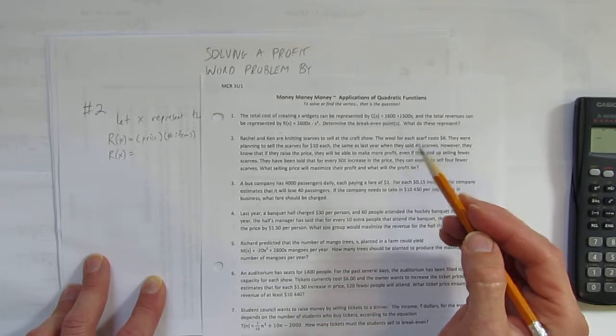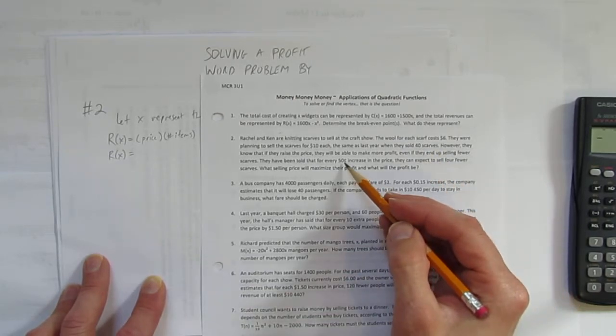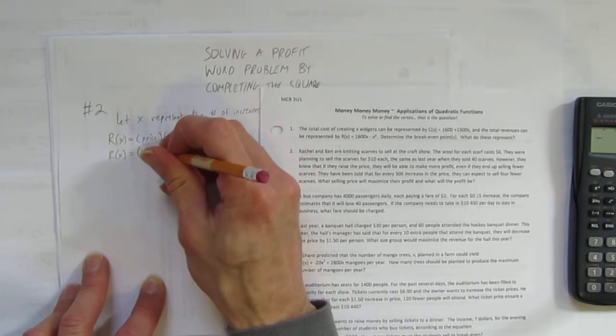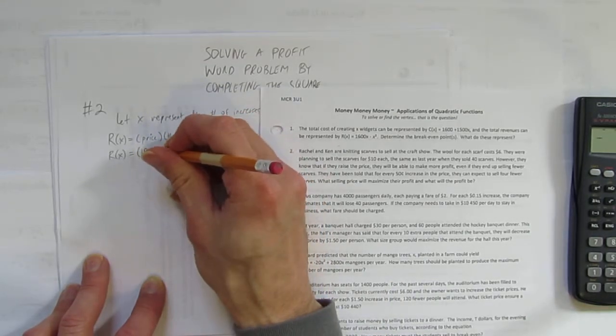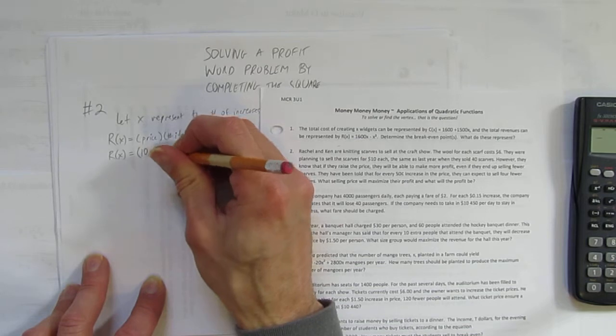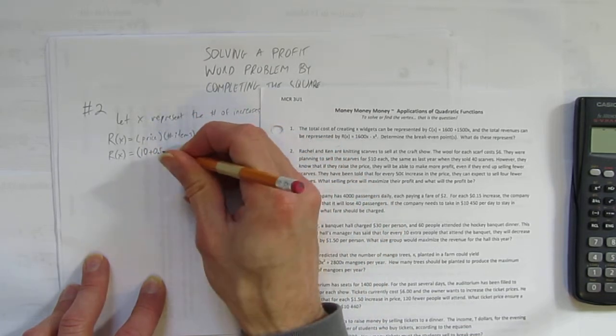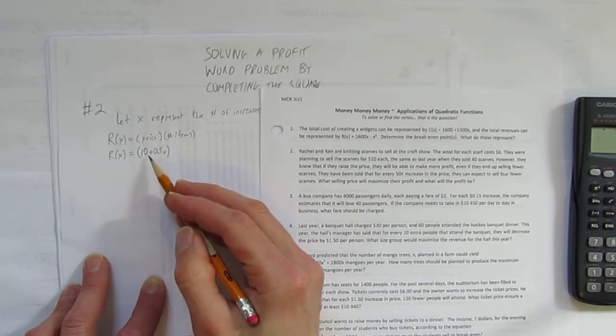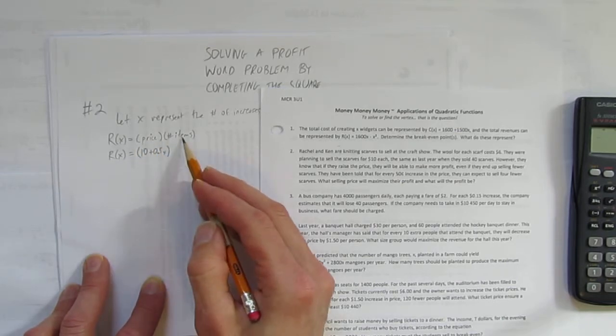But every time they increase the price, we're talking about a $0.50 increase. So that means we can represent price as $10 or $10 plus $0.50, 0.5, times x, the number of times they increase it. That's an expression for price. And again, revenue is price times number of items.